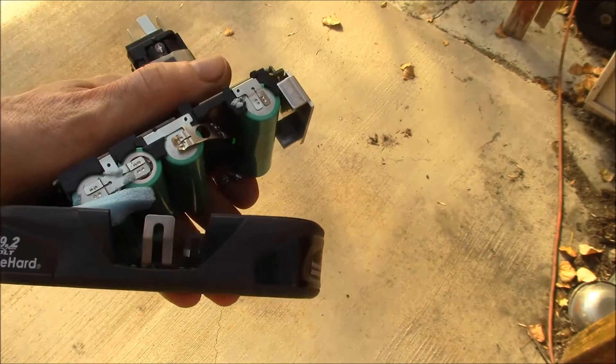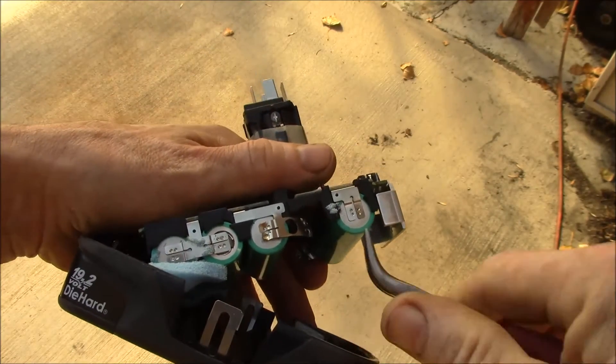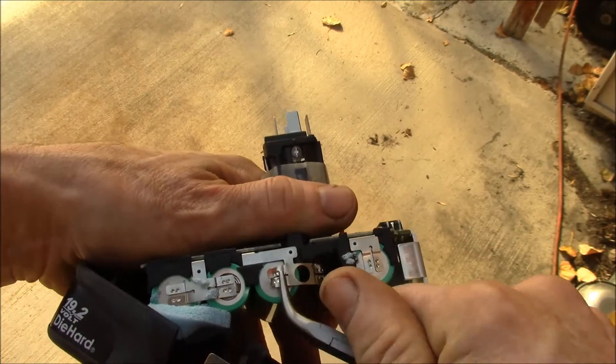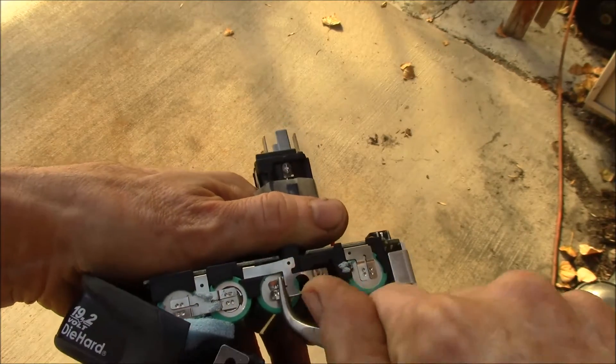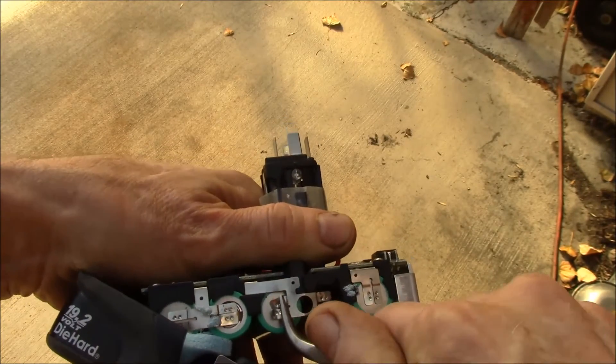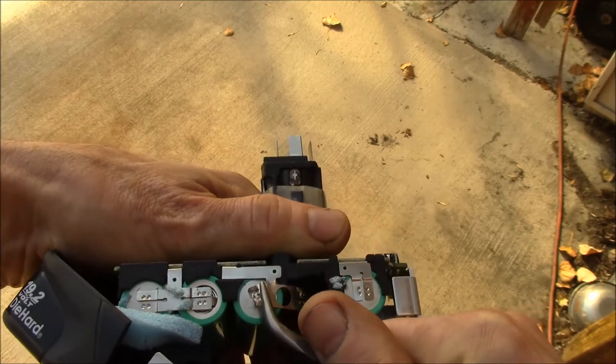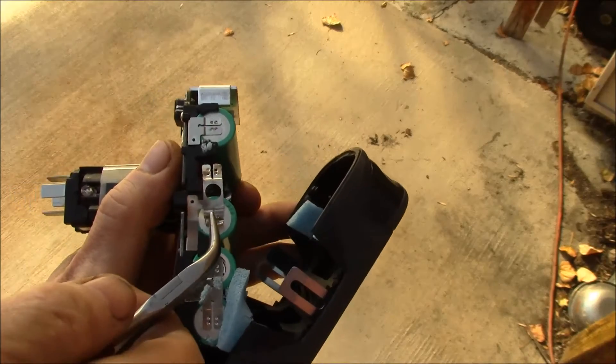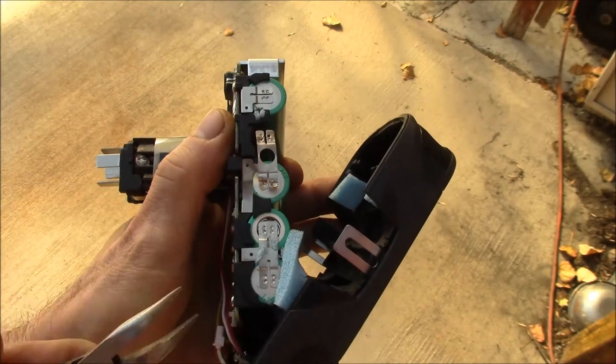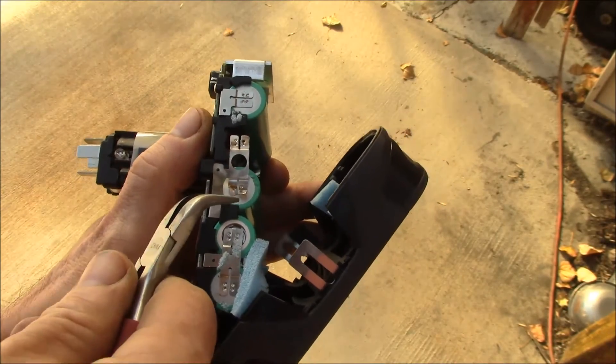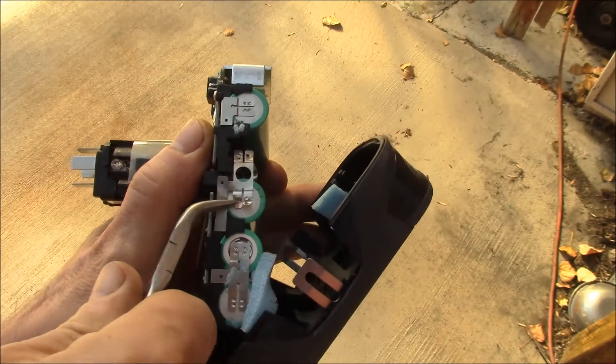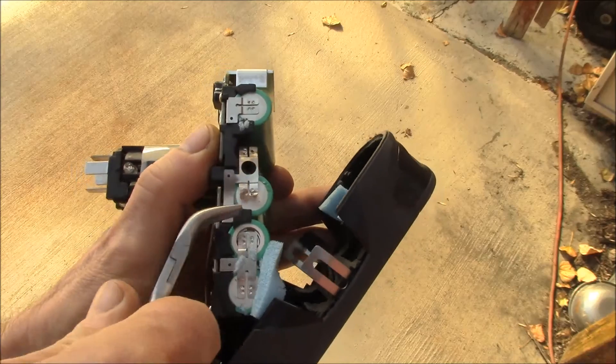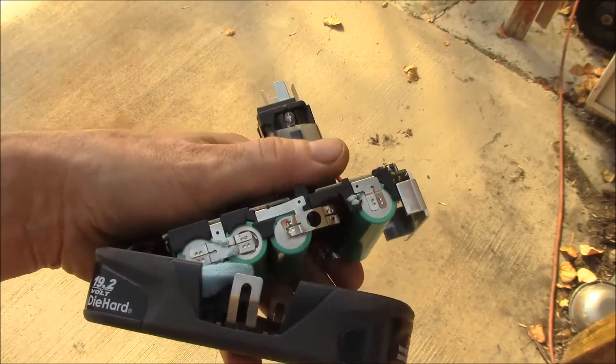I also find that you can sometimes get in here with some needle nose pliers and grab underneath and then just sort of rock them a little bit. I want to try to save these tabs so I can solder them onto the new cells which don't have any tabs.